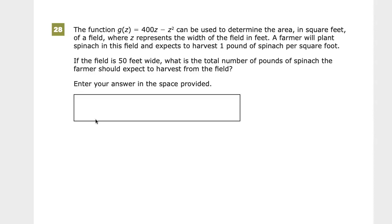Let me say that this is a math problem in the sense that they really are trying to shoehorn a real-world reference in there, and there's almost no purpose in it, but who knows. The function g(z) equals 400z minus z squared can be used to determine the area in square feet of a field,